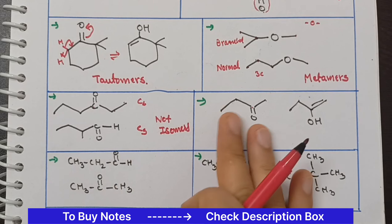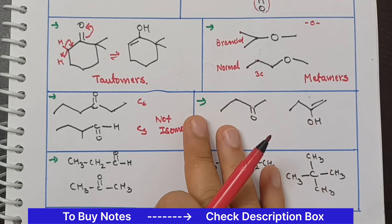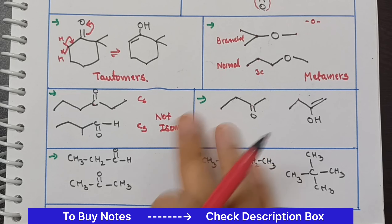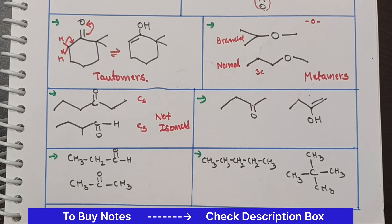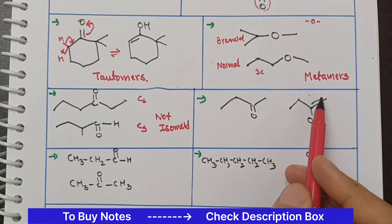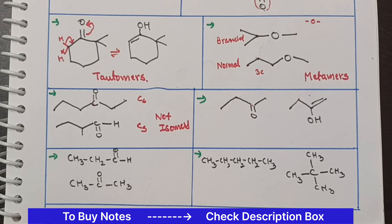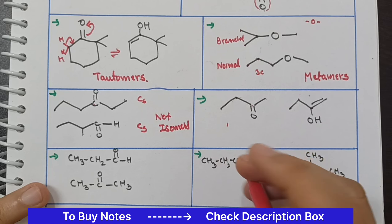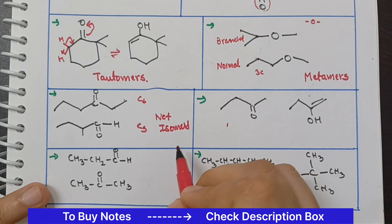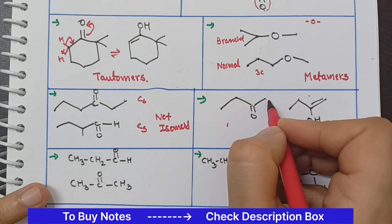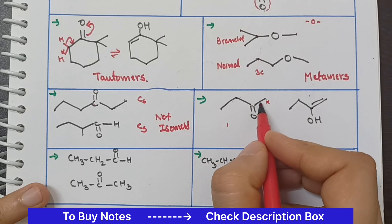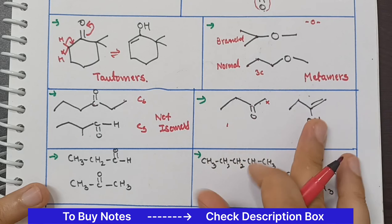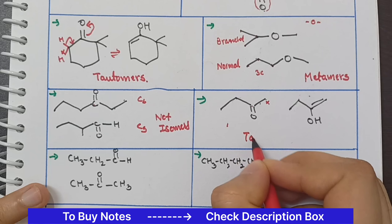Here the molecular formulas are the same — both have C4 carbons and 8 hydrogens. The molecular formula is the same. But here you can see OH with a double bond, so check for tautomerism. Here the alpha hydrogen migrates, forms OH, and a double bond is created. So these are tautomers.